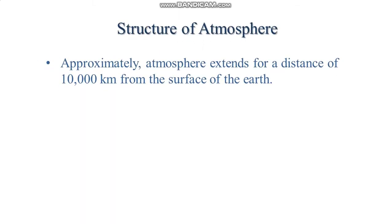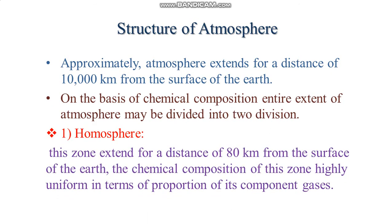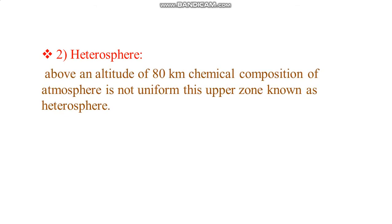Structure of atmosphere: the atmosphere extends for a distance of approximately 10,000 km from the surface of the earth. On the basis of chemical composition, the entire extent of atmosphere may be divided into two divisions. The first is the homosphere, which extends for a distance of 80 km from the surface of the earth, and its chemical composition is highly uniform in terms of proportion and component gases. The second is the heterosphere, above an altitude of 80 km, where the chemical composition of the atmosphere is not uniform.